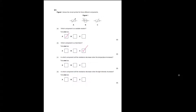In which component will the resistance decrease when the temperature increases? A thermistor is a temperature-dependent resistor, so the answer is C. In which component will the resistance decrease when the light intensity increases? That's B, because it's an LDR — a light-dependent resistor.